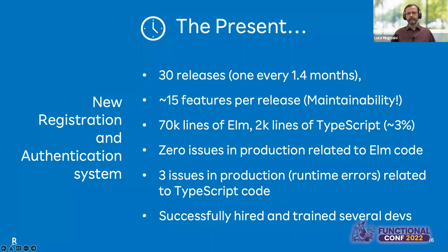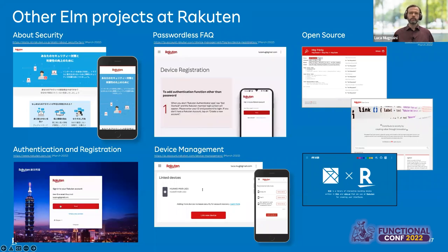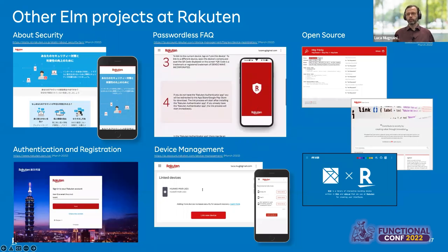Fast forward three years, and about our new registration and authentication service: we had around 30 releases, one every month and a half, with around 15 features implemented in each release. We are very satisfied with the level of maintainability, which was our main initial goal. Our code base now has 70,000 lines of Elm code and 2,000 lines of TypeScript code. We had no blockers and basically zero issues related to the Elm code, but a few issues related to the TypeScript code, which is around 3% of our code base. Elm has been proven to be a resilient technology. We also successfully hired and trained several developers. We didn't use Elm only for the registration and authentication system, but for other projects as well — from static pages to internal projects, open source projects, and so on. Some of those projects are generated server-side, so they also work without JavaScript.